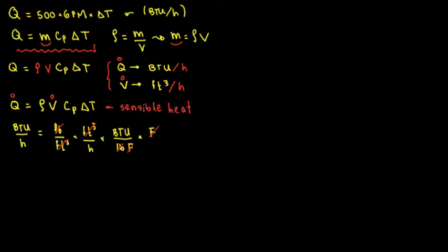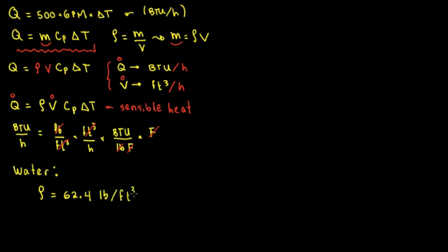What we're trying to do is convert this sensible heat equation into a rule of thumb — the formula 500 times GPM times delta T, which is the sensible heat equation for water. To do that, we're going to use conversions. The conversion factors we need are: the density of water at normal conditions is 62.4 pounds per cubic foot, and one cubic foot of water equals 7.48 gallons. You can easily find these on Google.